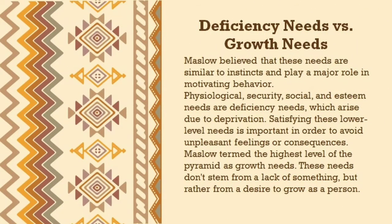Before going through each level, there is an important concept: deficiency needs and growth needs. Maslow believed these needs are similar to instincts and play a major role in motivating behavior. Physiological, security, social, and esteem needs are deficiency needs — arising from deprivation. These lower-level needs are important in order to avoid unpleasant feelings and consequences.